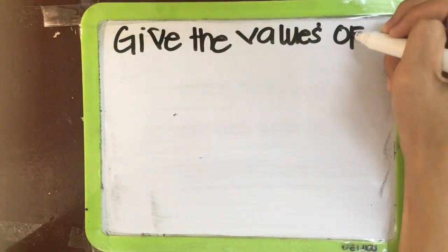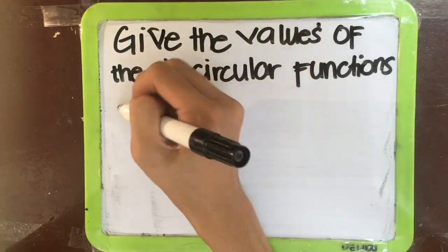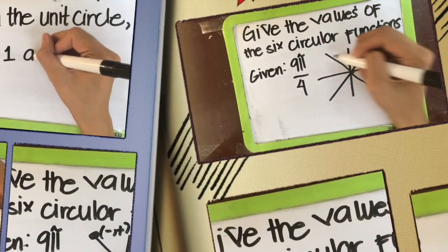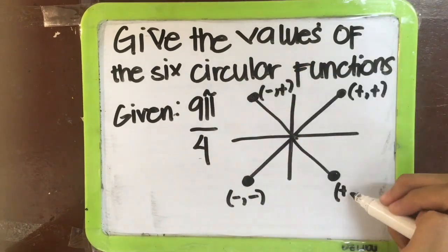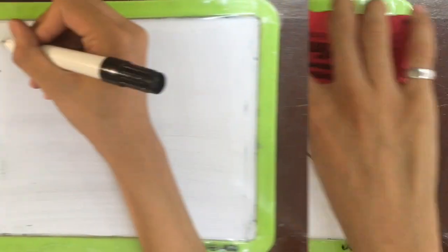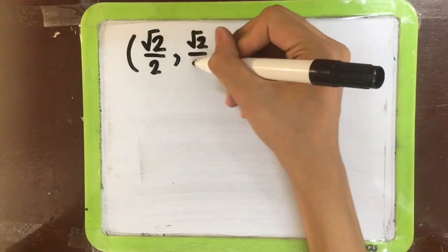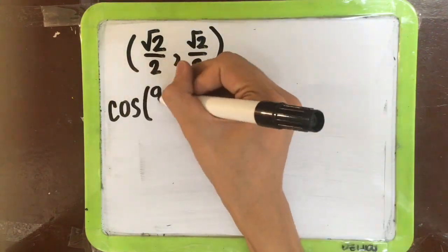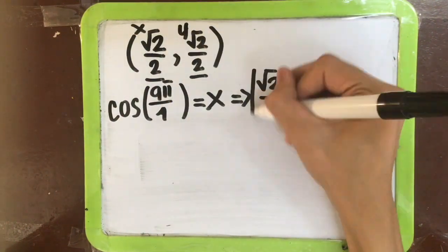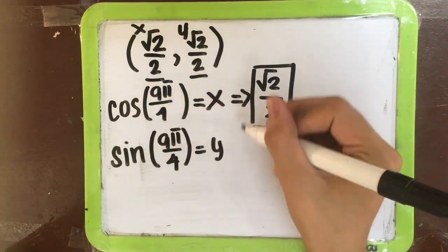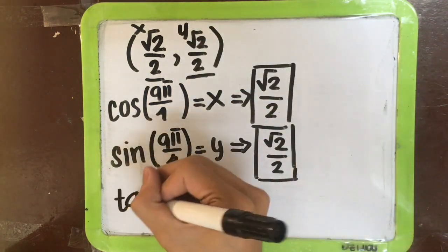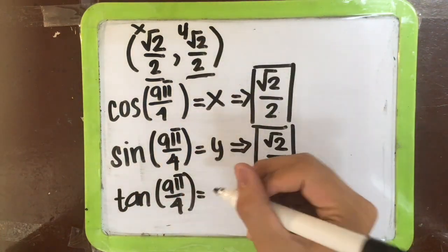Give the values of the six circular functions given 9π over 4, where the graph is divided into 4 equal parts and its coordinates are (√2/2, √2/2). For cosine, which equals x, its value is √2 over 2. For sine, which equals y, its value is also √2 over 2.